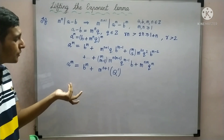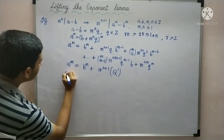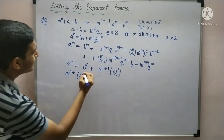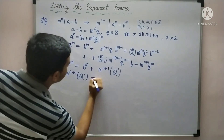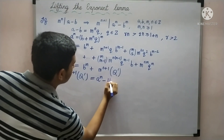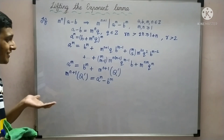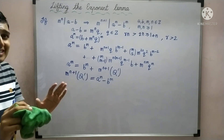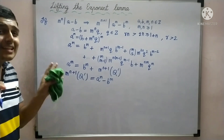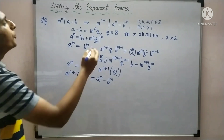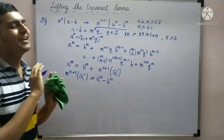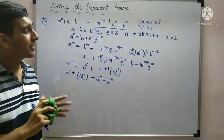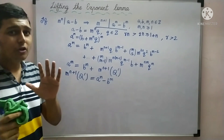Now, if we subtract b raised to m from both sides, it is not difficult to see that we have proved the Lifting the Exponent Lemma. This is because by definition, if a raised to m minus b raised to m is some integer times m raised to n plus 1, then m raised to n plus 1 must divide a raised to m minus b raised to m.